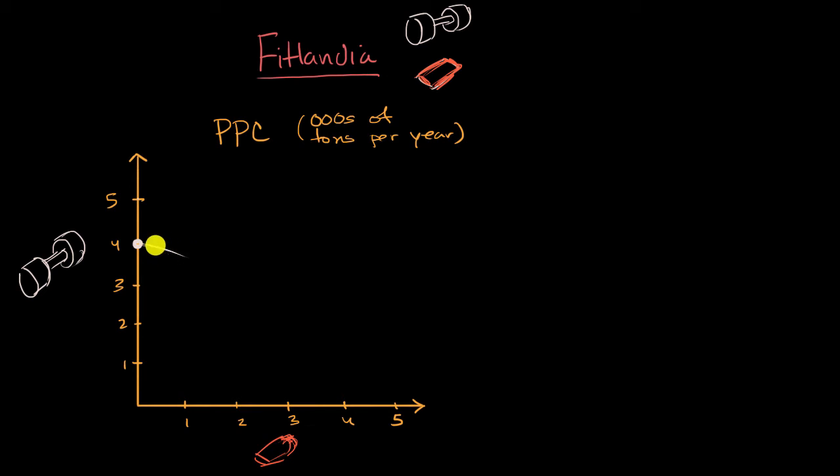And so the more protein bars we produce, we're going to produce fewer and fewer dumbbells. And so we're going to sit on this curve if we're producing as efficiently as possible, given the resources we have. And if we put all of our resources into protein bars, we could produce 3,000 tons of protein bars per year. So this right over here is our production possibilities curve.